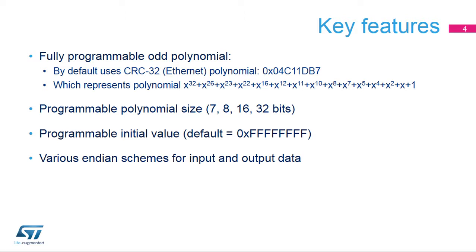The CRC calculation unit integrated in the STM32 features a fully programmable odd-value polynomial with a programmable size of 7, 8, 16, or 32 bits. The initial value is also fully programmable, allowing for very flexible run-time CRC code generation.